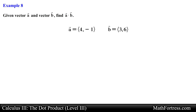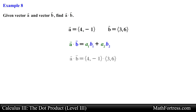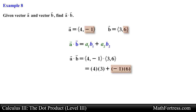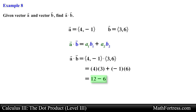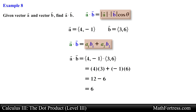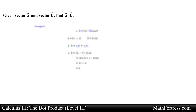Given vector a and vector b, find a dot b. We have two planar vectors in component form, so we use the component definition of the dot product. We multiply the x-components of each vector together and add this to the product of the y-components. The first product simplifies to 12 and the second to negative 6, giving a final answer of 6.